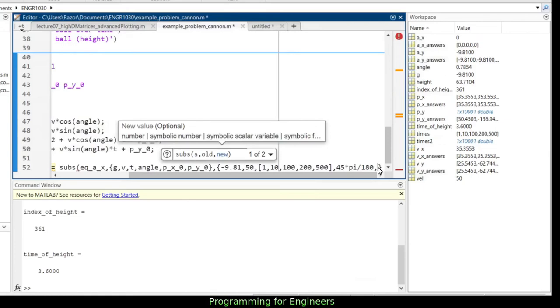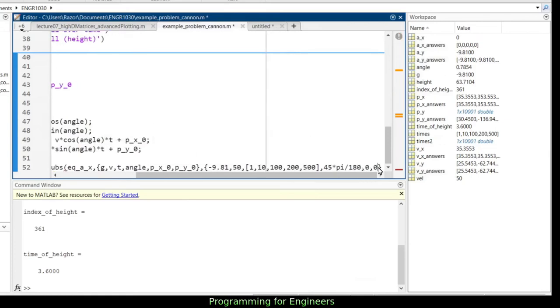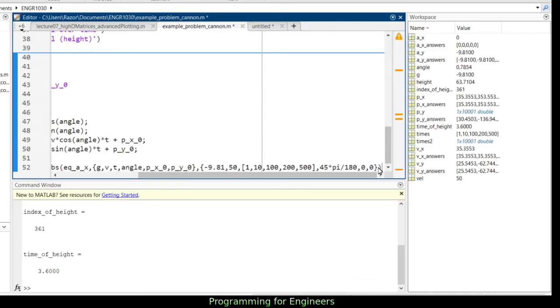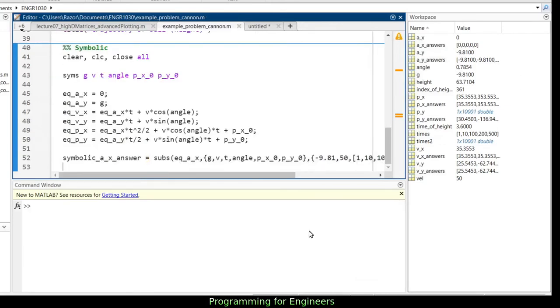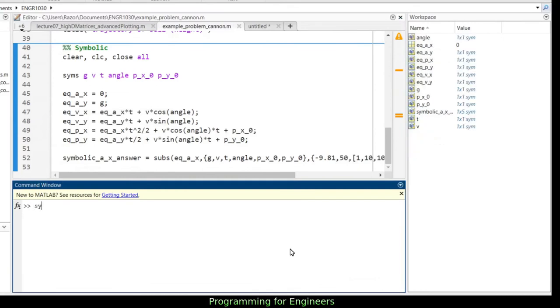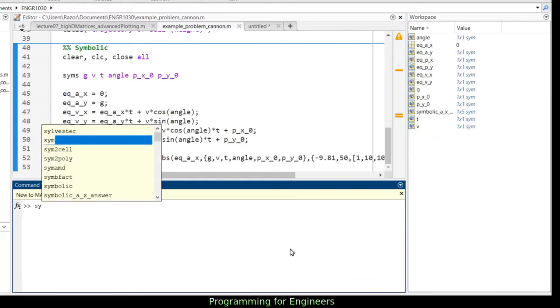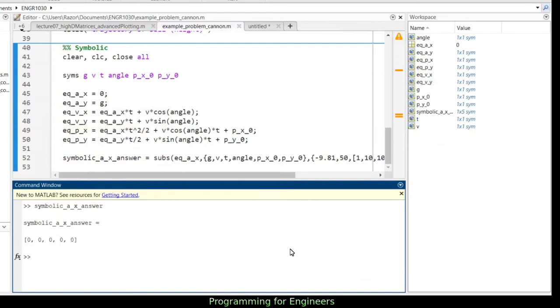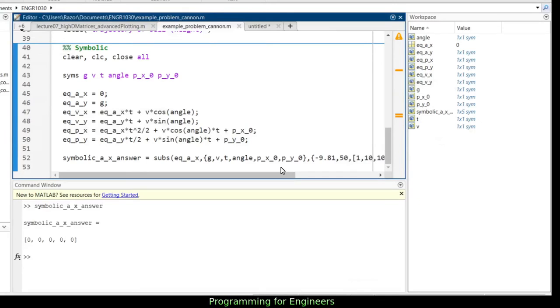And angle is 45 times pi over 180, and PX0 is 0 and PY0 is 0. So let's check. If I close this, run it. Did I do anything wrong? Looks okay. The symbolic AX answer: 0, 0, 0, 0, 0. Perfect. That works just fine.